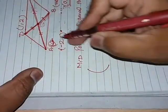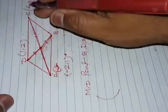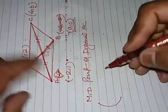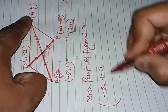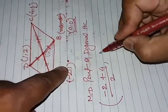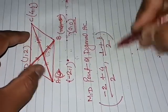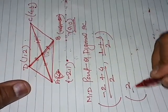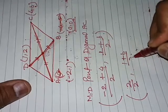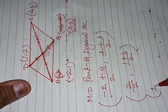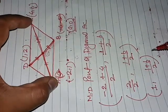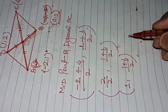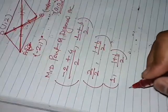Finding the midpoint of diagonal AC. Using the midpoint formula: x = (x1 + x2)/2, y = (y1 + y2)/2. So x = (-2 + 4)/2 = 2/2 = 1, and y = (1 + b)/2. So the midpoint of AC is (1, (1+b)/2).